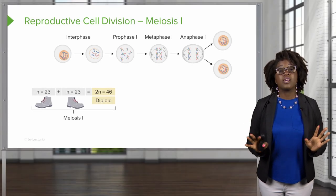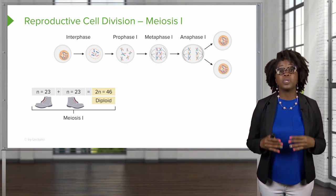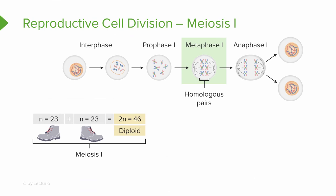Let's look at meiosis. Recall that there are 46 chromosomes, or 23 pairs of chromosomes — think of it like 23 pairs of shoes. In meiosis, during metaphase I, we will line up these pairs. Instead of creating one single file line, we will have two lines. We also refer to these pairs as homologous pairs. These pairs will line up at the midline, much like lining up your right shoe and left shoe to create two lines. The chromosomes at this point are duplicated and in the form of sister chromatids.